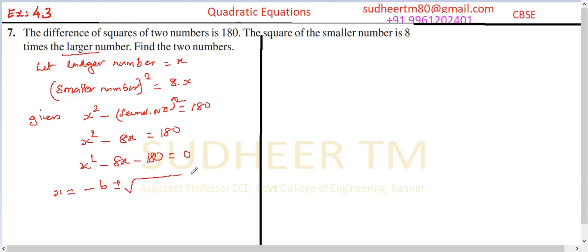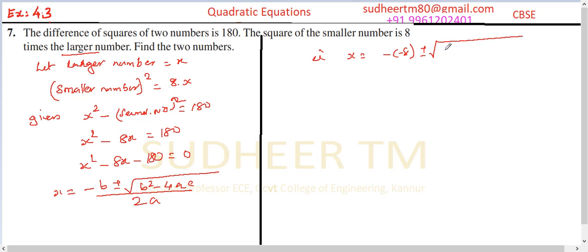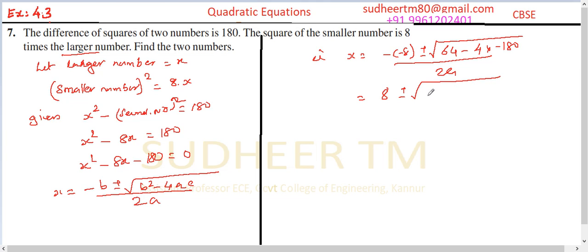To find X, let's apply the quadratic formula: X equals minus B plus or minus root of B squared minus 4AC, whole divided by 2A. Therefore X equals minus of minus 8, plus or minus root of 64 minus 4 times minus 180, whole divided by 2.